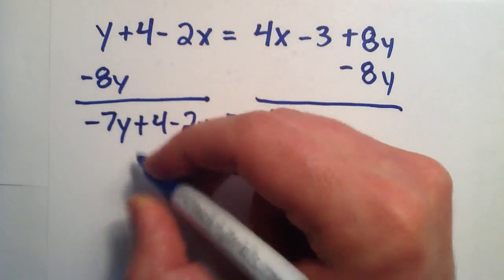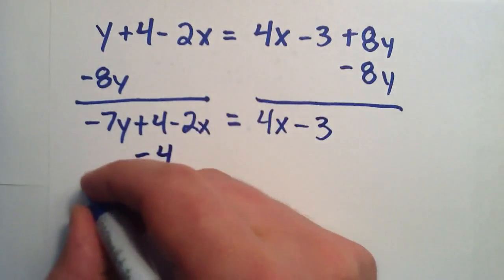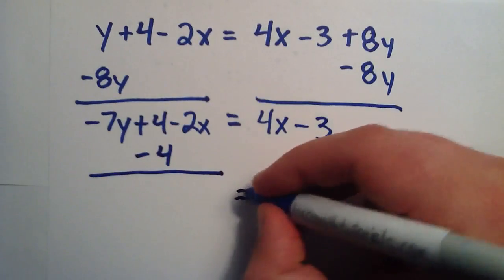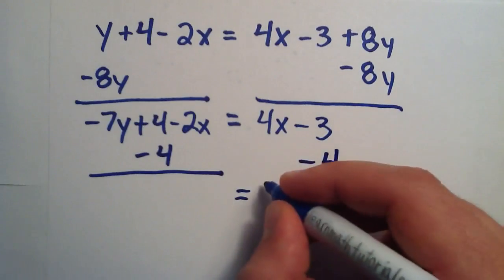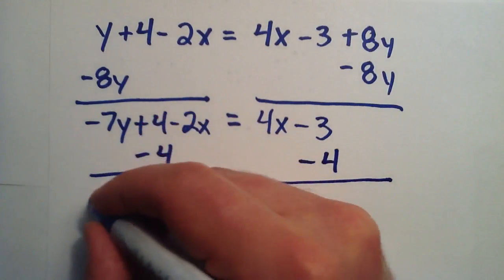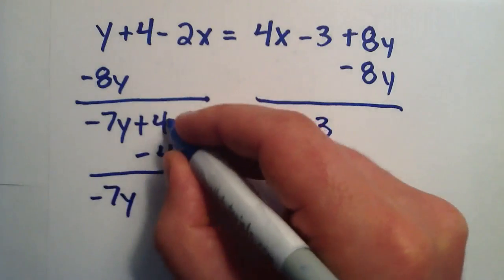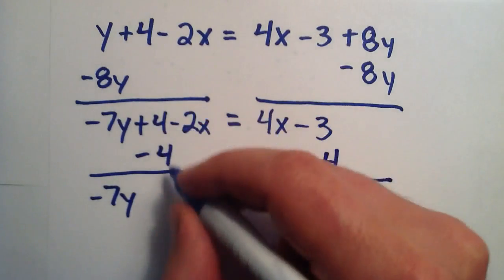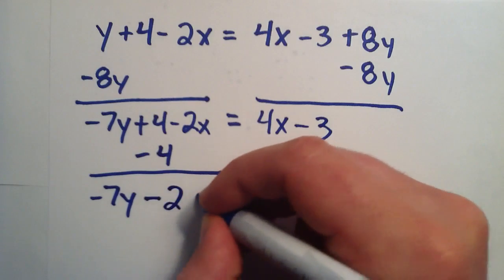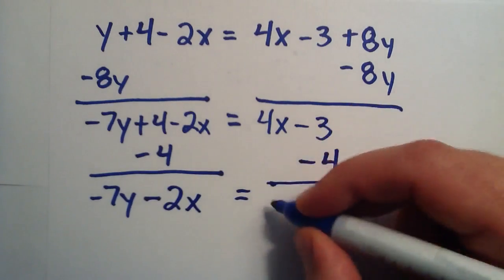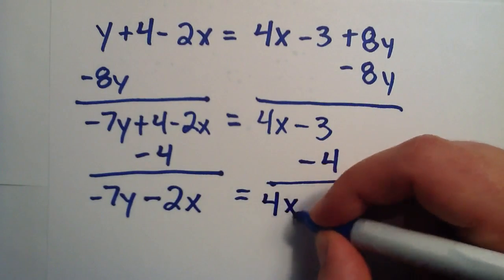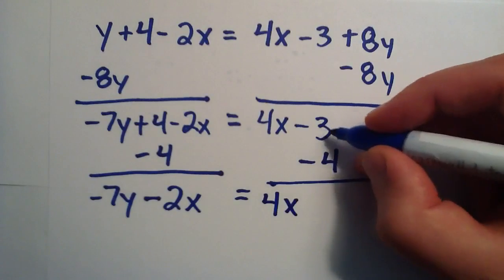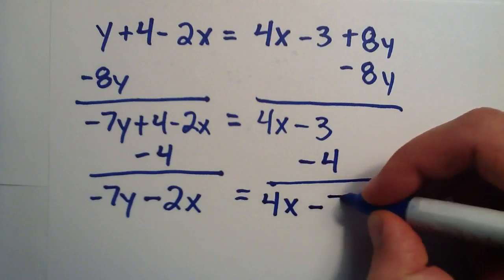And we'll have to take away the same amount from this side. So we didn't change the y's, that stays the same. A positive four and a negative four simply give us zero. And a negative two x is just negative two x. Now we didn't change the x's over here, we rewrite that. We have negative three and we're taking four more away, so that gives us negative seven.